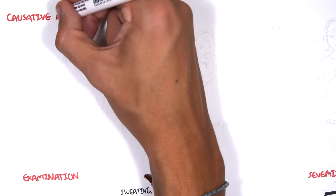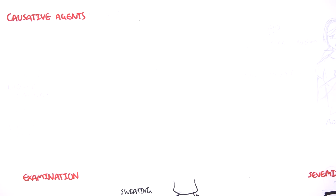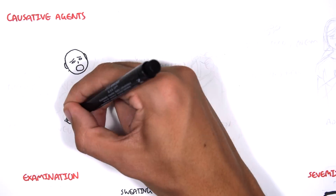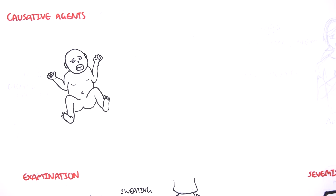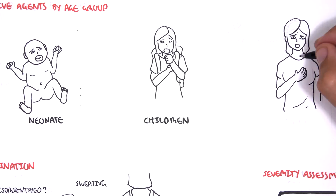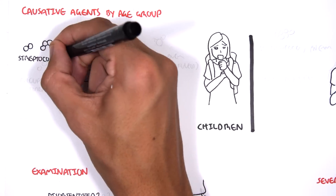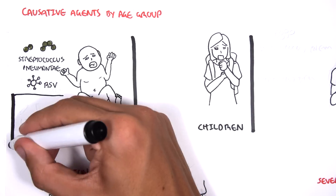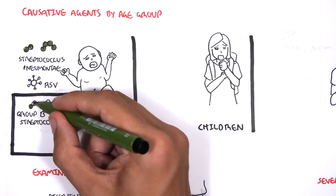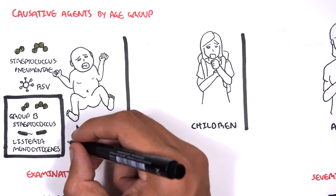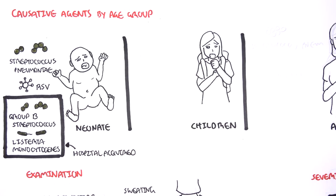The causative agents of community-acquired pneumonia can be bacterial, viral, parasitic, or fungal, with bacteria and viruses being the main causes. Dividing by age group: in neonates, common agents include Streptococcus pneumoniae, respiratory syncytial virus (RSV), Group B Streptococcus, and Listeria, most likely acquired from the mother after delivery.